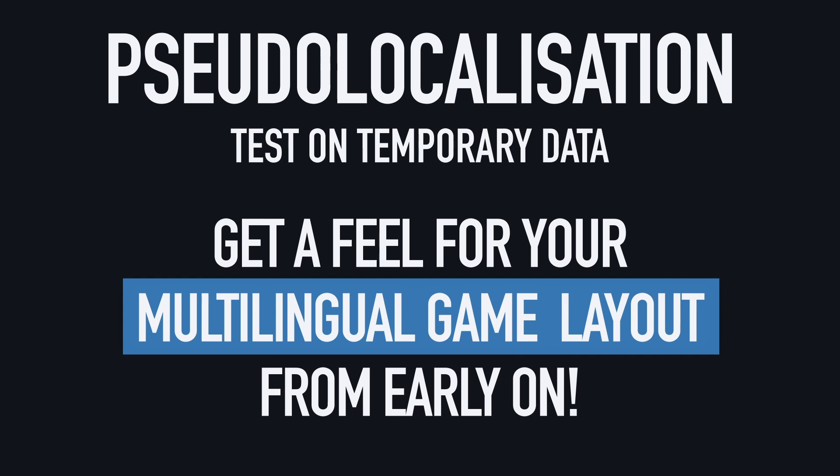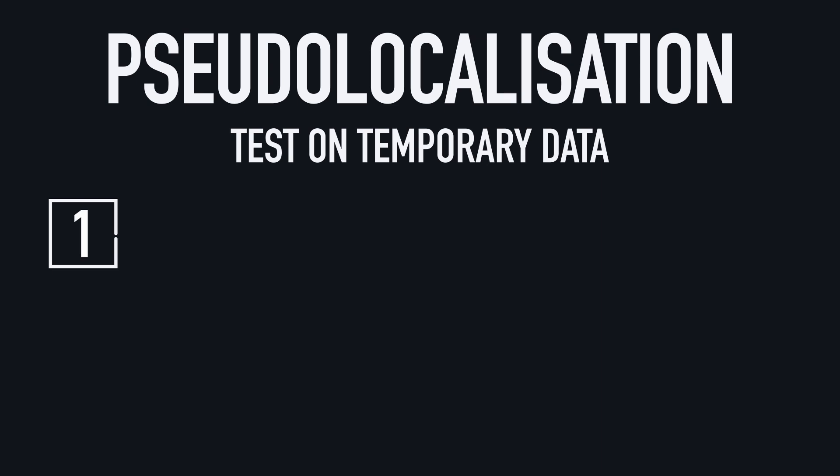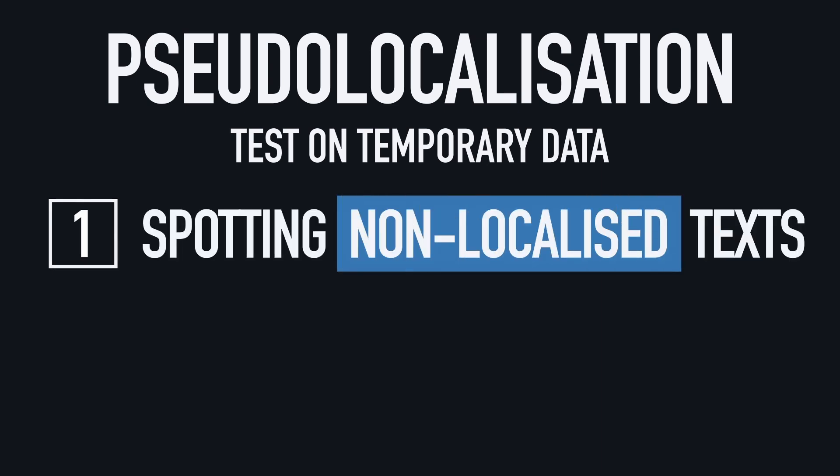More precisely, it can be a great way to identify three kinds of issues. First of all, it's nice to have a way of quickly eyeballing the texts that aren't localized yet. Those are all the texts that don't actually correspond to a key in your localization table, and that thus will stay exactly the same no matter the current language. Pseudo-localization tools can of course be a great solution to easily spot the remaining missing labels.